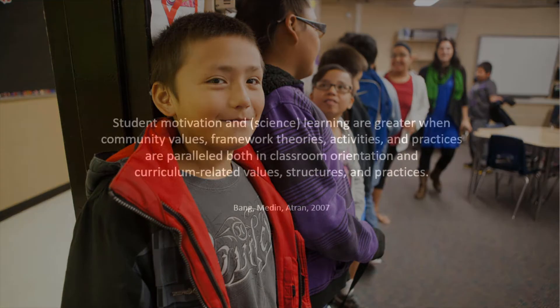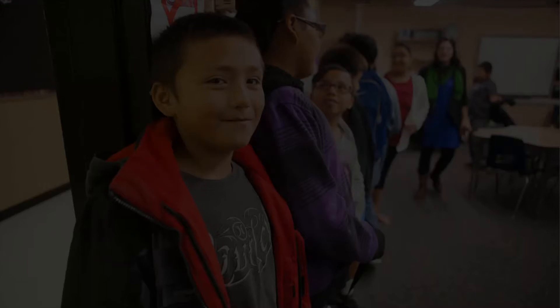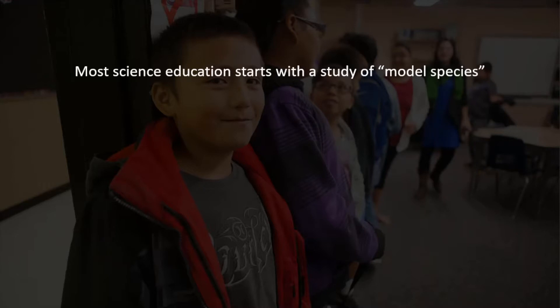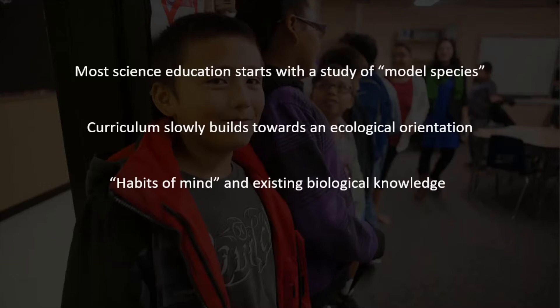Researchers theorize that student motivation and science learning are greater when community values, framework theories, activities, and practices are paralleled both in classroom orientation and curriculum-related values, structures, and practices. Historically, most science education starts with the study of model species, which exhibit the most salient characteristics of living beings, then the curriculum slowly builds towards an ecological orientation. This learning pathway does not take into account native students' habits of mind, nor does it leverage their existing biological knowledge.